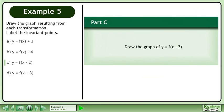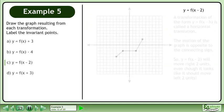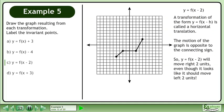In Part C, we'll draw the graph of y equals f(x minus 2). A transformation of the form y equals f(x minus h) is called a horizontal translation. The motion of the graph is opposite to the connecting sign. So y equals f(x minus 2) will move right 2 units, even though it looks like it should move left 2 units.